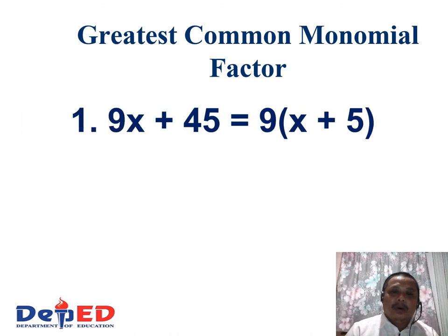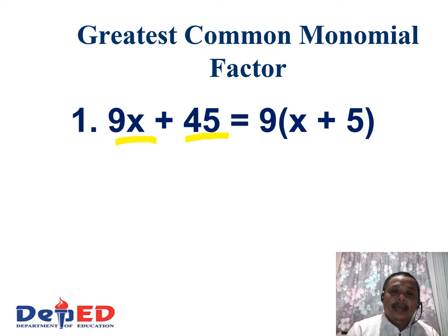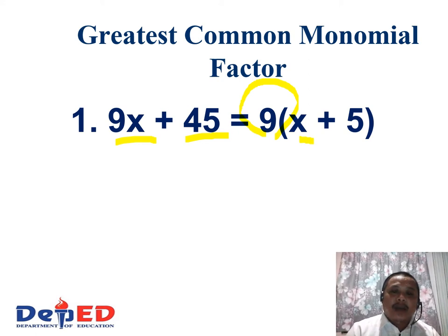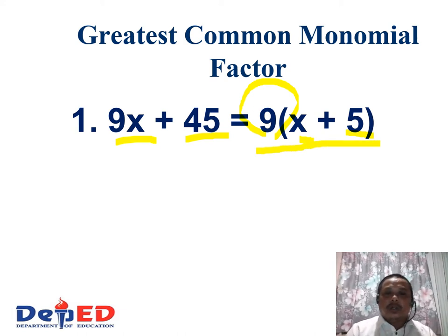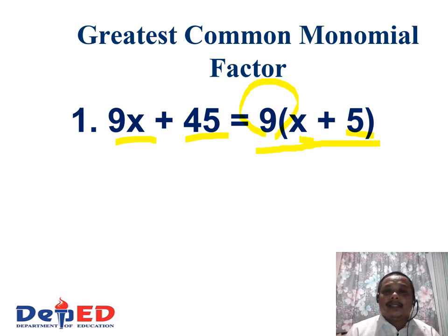Another example: 9x plus 45. The GCF of 9 and 45 is 9. Dividing 9x by 9 gives x, and 45 divided by 9 gives 5. Therefore, the factors of 9x plus 45 are 9 times the quantity of x plus 5.